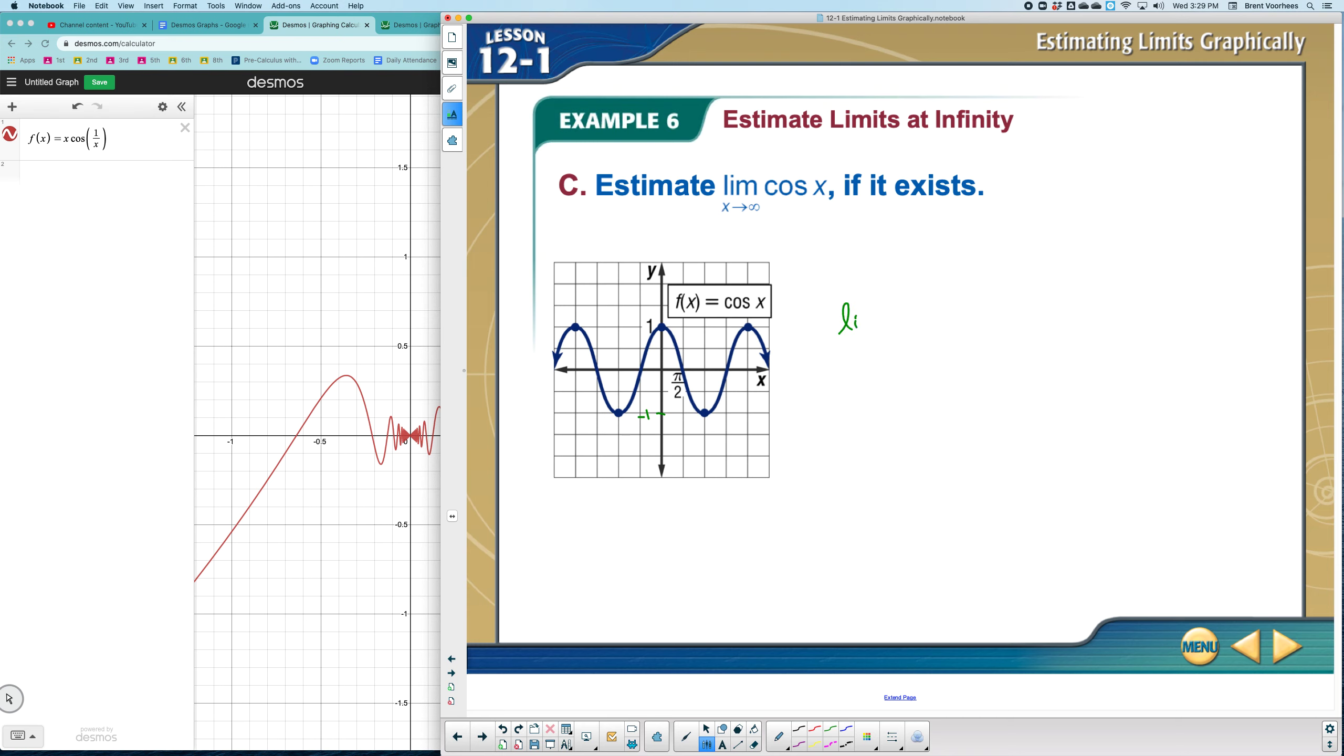No, the answer is this limit of cosine as X approaches infinity does not exist. And I'm going to say it does not exist since the oscillating values are fixed. And they're fixed between negative 1 and 1.